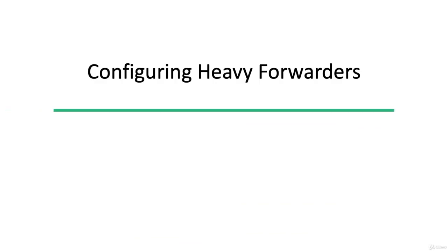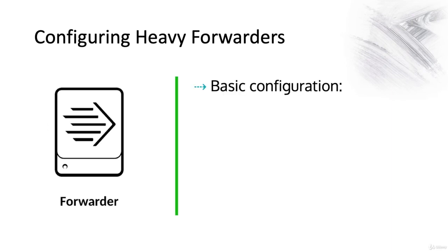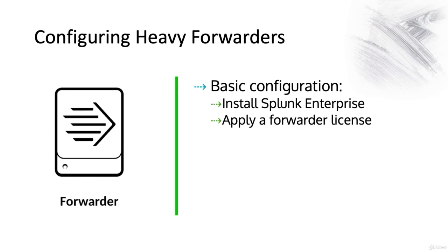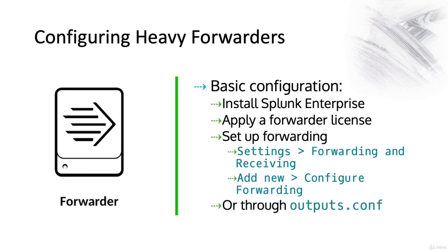Configuring heavy forwarders. The basic configuration for a heavy forwarder is not much different from an installation of Splunk Enterprise. We install Splunk Enterprise, we apply a forwarder license, and then we set up forwarding. We go to Settings, Forwarding and Receiving, then Add New, and then configure forwarding. Or we can edit the outputs.conf file directly.